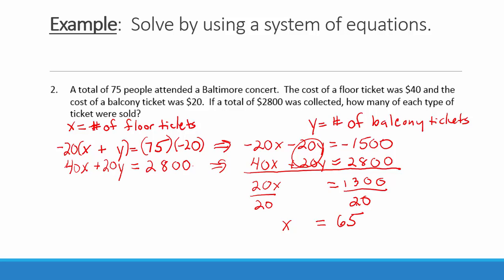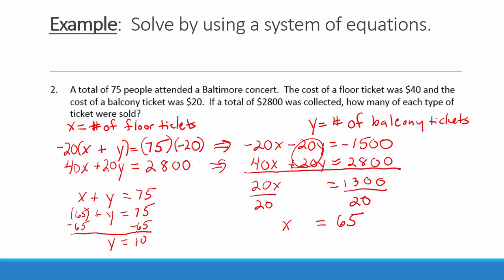Now we will solve for y by substituting the value for x into one of the equations. The top equation is x plus y equals 75. I will replace x with 65 and solve for y. Subtracting 65 from both sides, we get y is equal to 10. So the number of floor tickets is 65 and the number of balcony tickets is 10.